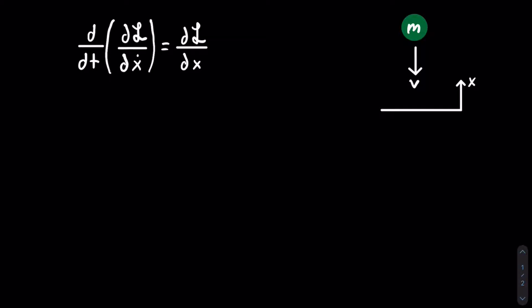Now what is the L? The L is the difference between the kinetic and potential energies. So what exactly are our energies in this problem? So we know that our kinetic energy is equal to one half m v squared. And we know that our gravitational potential energy is equal to m g h.